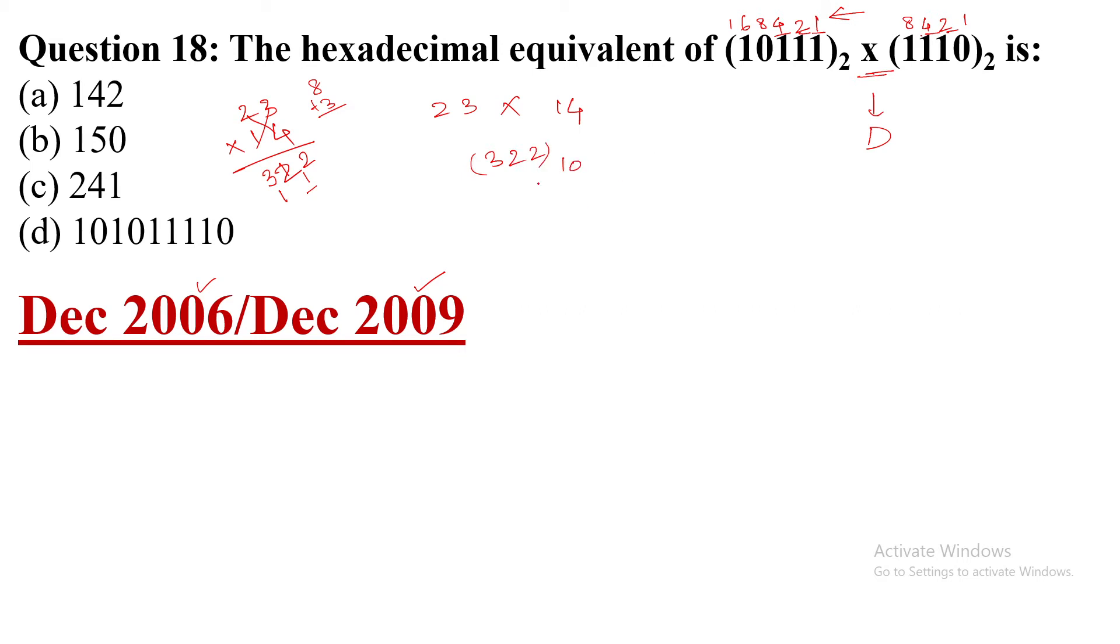Now convert this decimal to binary. So now again I am writing in 2's power notation. It is a very easy method for decimal to binary conversion. Now 2 to the power 0 is 1, 2 to the power 1 is 2, 2 to the power 2 is 4, 2 to the power 3 is 8,